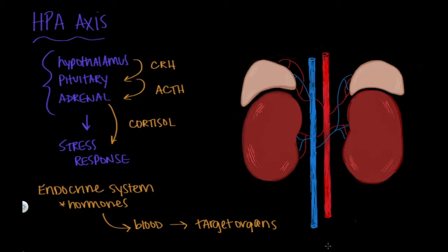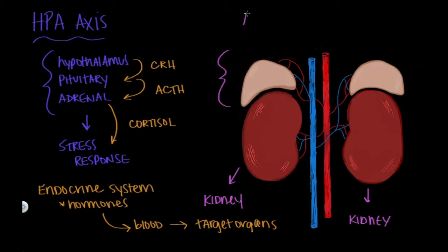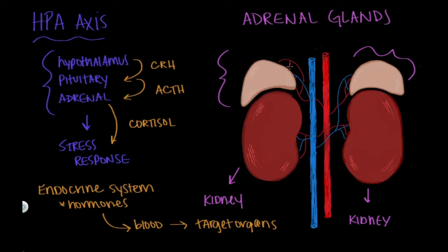Let's take a second to talk about where the adrenal glands are found in the body. I've drawn an anatomical representation of our kidneys, and we have two adrenal glands, one on top of each kidney. If we break down the word adrenal, we get 'ad,' meaning above, and 'renal,' meaning kidney — so it literally means above the kidney.